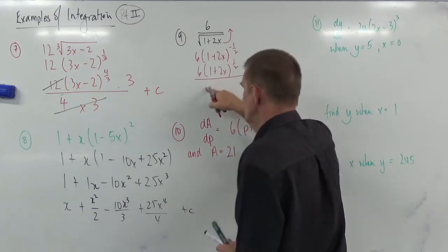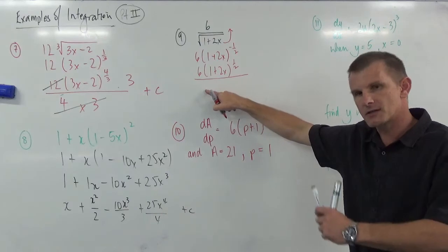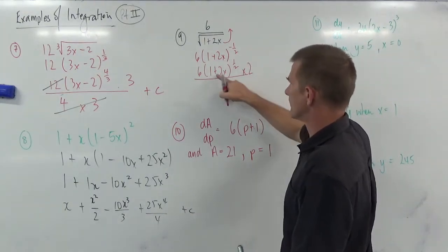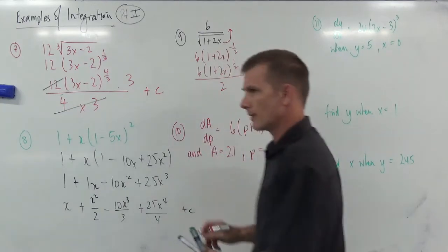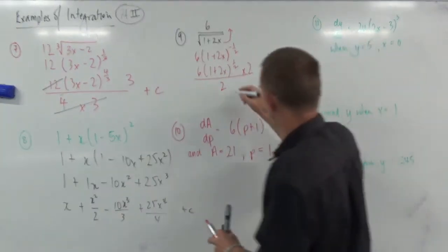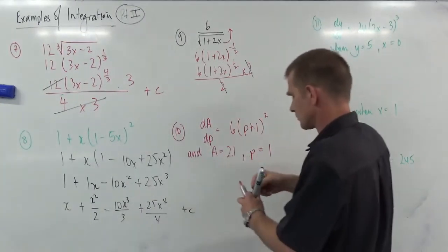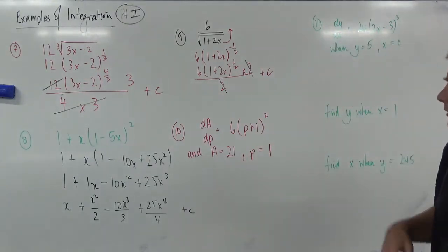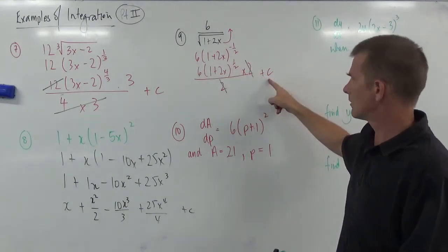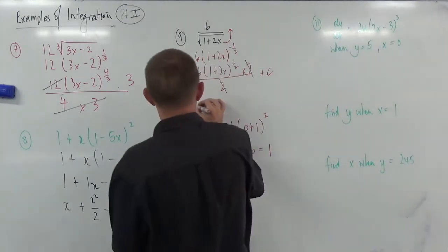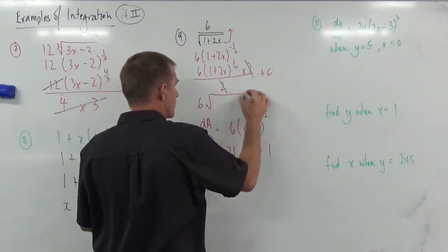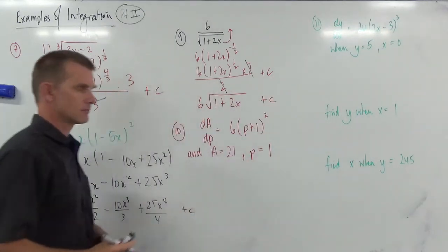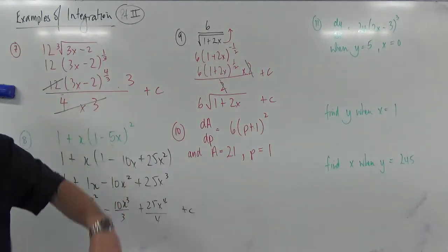Divide by the new power. If I'm dividing by 1 half, that's the same as multiplying by 2. And divide by the derivative, well, that's 2 anyway. So therefore, that 2 and that 2 are going to cancel. Don't forget about your plus c here at the end. So now, really, it's just this guy and that. So I could actually write that as 6 square root of 1 plus 2x plus c. Ah, these are getting easy, aren't they?